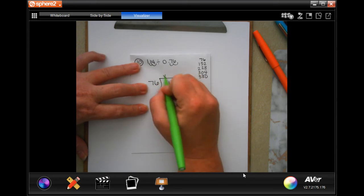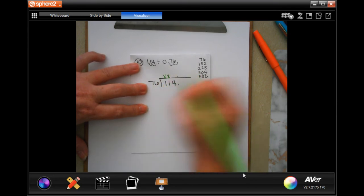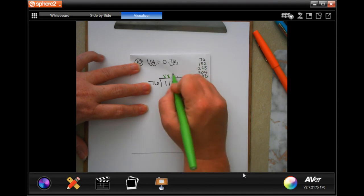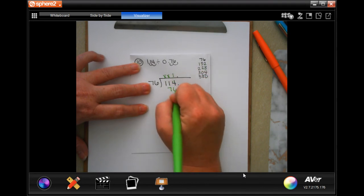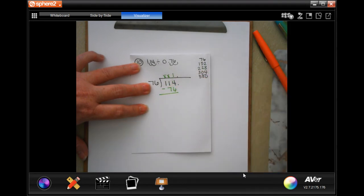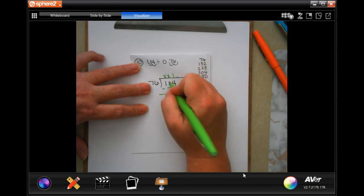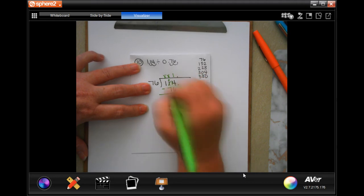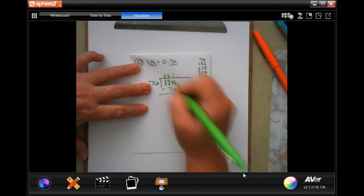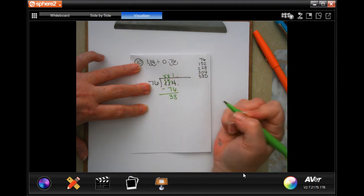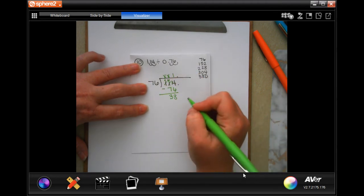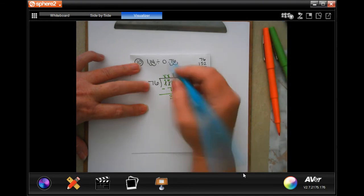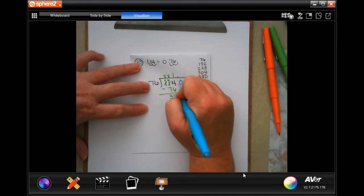76 is not going to go into one. It's not going to go into 11. Into 114. It looks like the most I'm going to get is one. So 114 minus 76. Four can't take away six. I'm going to borrow that one. Making that 14. 14 take away six is eight. Zero can't take away seven. I'm going to borrow that and make that 10. 10 take away seven is three. So I have 38.